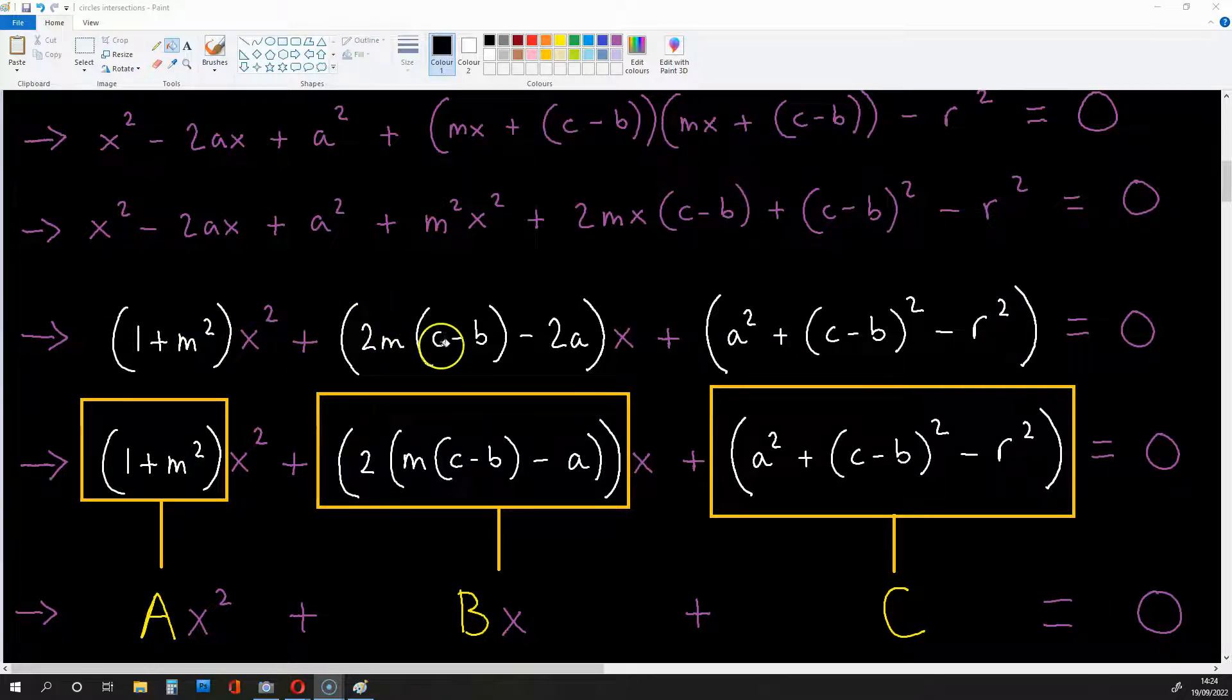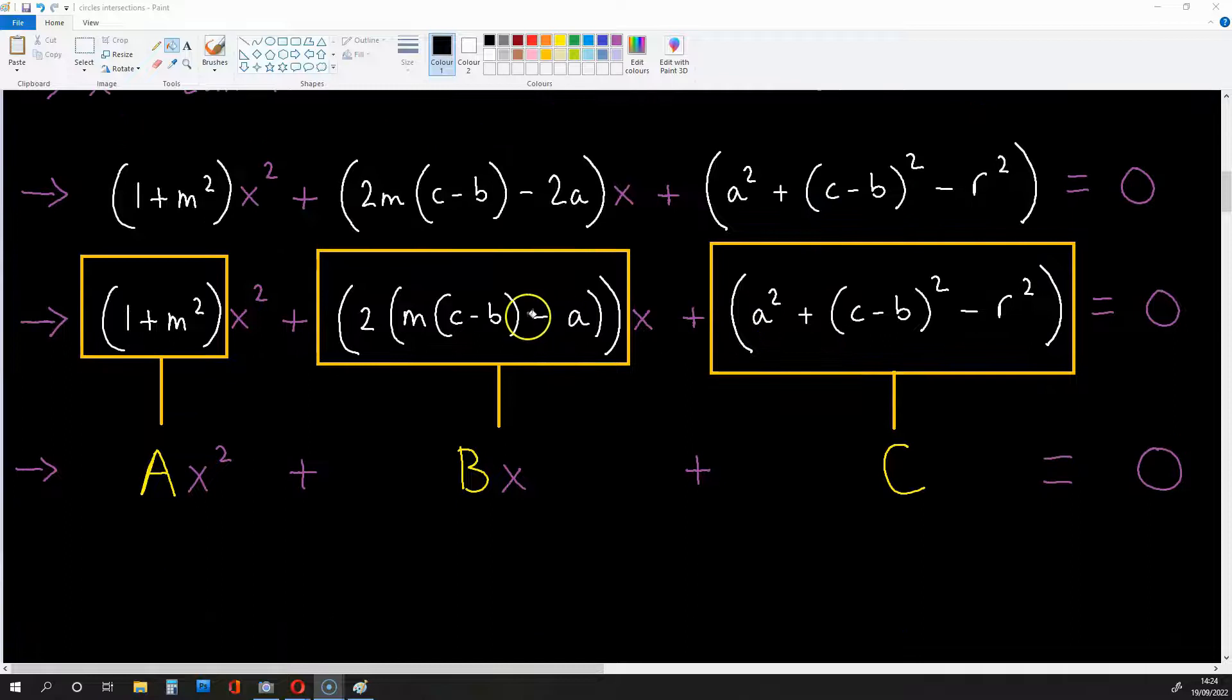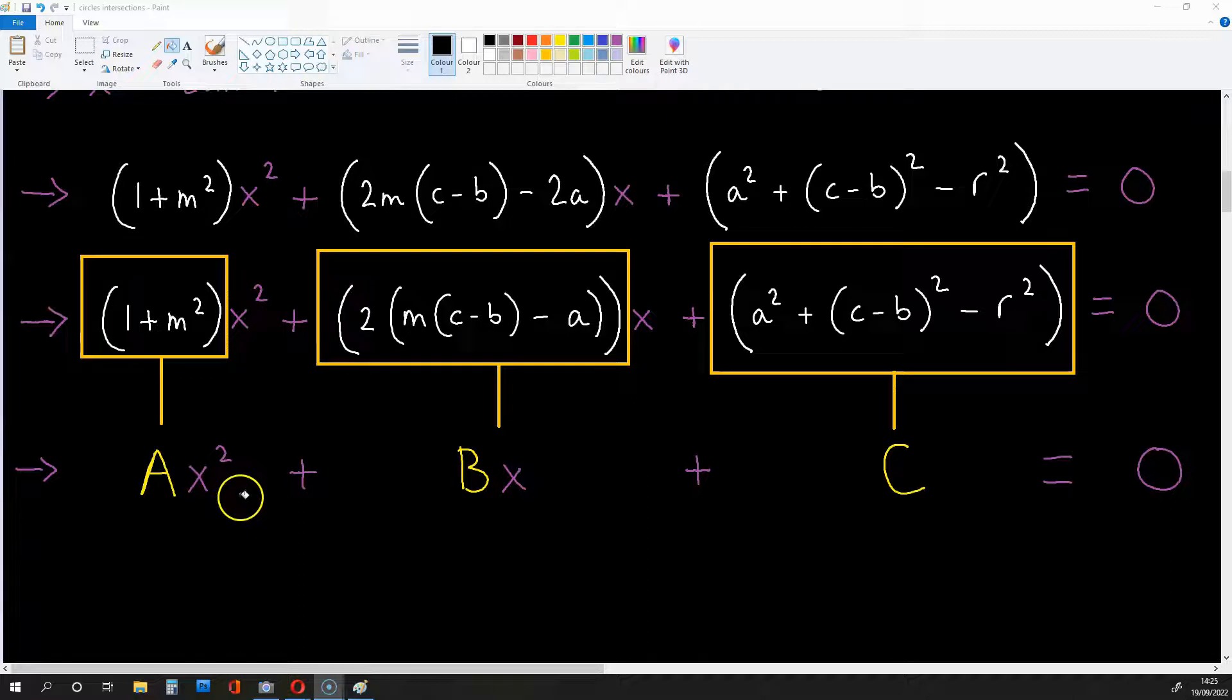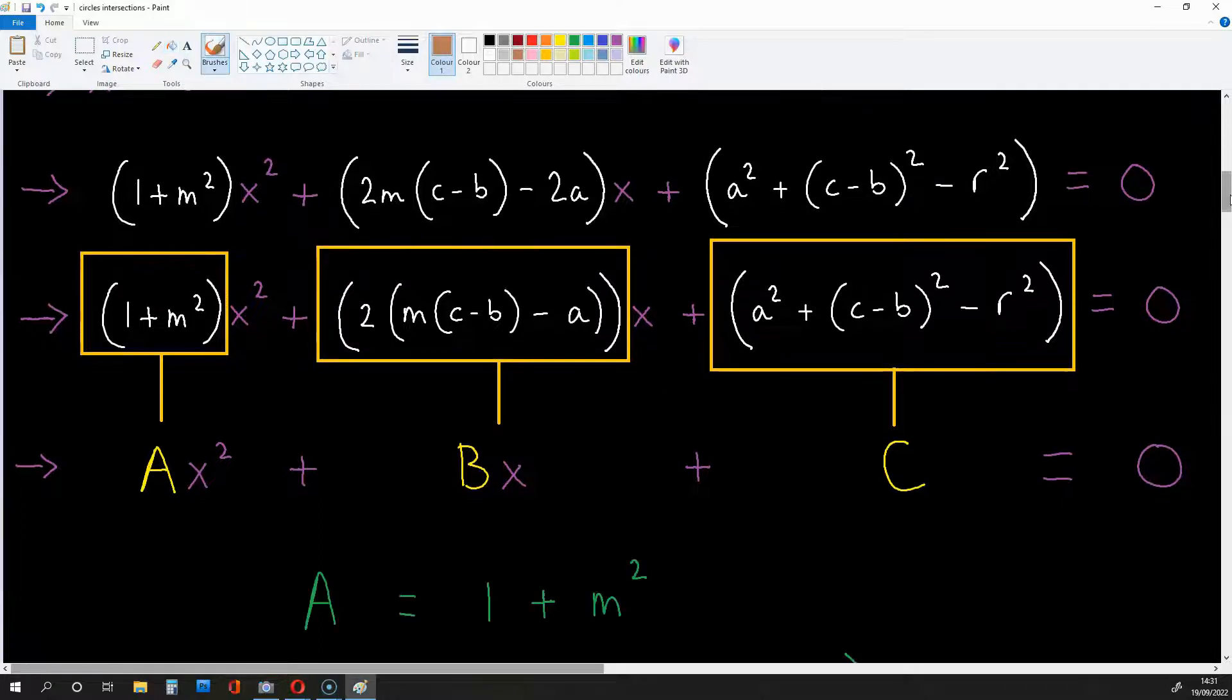And these coefficients, okay, can be regarded as a, b and c. And if we have the equation right over here, a x squared plus bx plus c is equal to zero, we can get the value of x for those intersections.